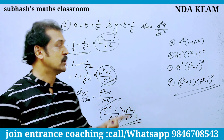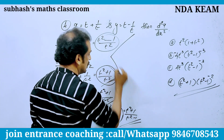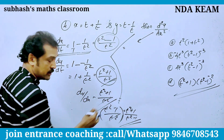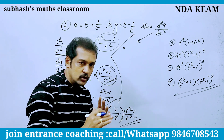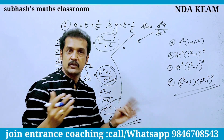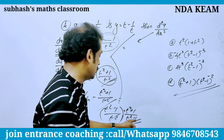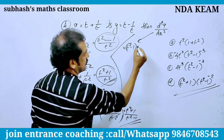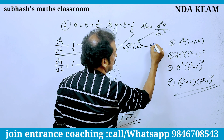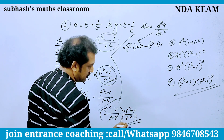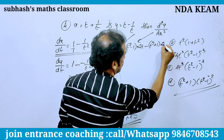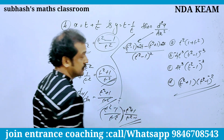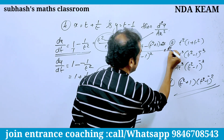Now for d²y/dx². Apply the quotient rule: denominator into derivative of numerator minus numerator into derivative of denominator, divided by denominator squared. So: (t² − 1) × derivative of numerator 2t, minus (t² + 1) × derivative of denominator 2t, all divided by (t² − 1)², then multiplied by dt/dx.